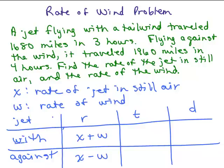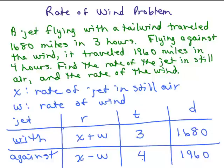What does this tell us about going with the wind? It said it traveled 1,680 miles in 3 hours, so the time was 3 hours and the distance was 1,680. Flying against the wind, it traveled 1,960 miles in 4 hours. So this gives rise to two equations if we use the formula rate times time equals distance.